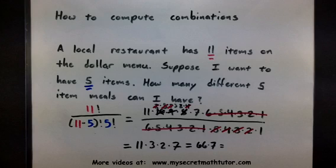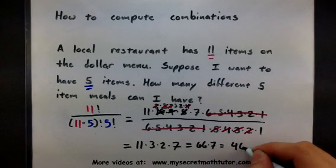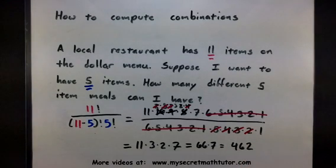When I do that, I get 462. So, this 462 represents all of the different 5 item meals I can get if the dollar menu has 11 items. Looks pretty good.